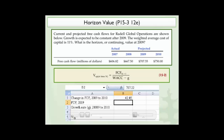Then we drop in what the base period is, which is 2009, and that was the $707.55. So to calculate the growth rate, we simply divide the change in free cash flow by the base period. And when we do that, we come up with 6% as a growth rate from 2009 to 2010.